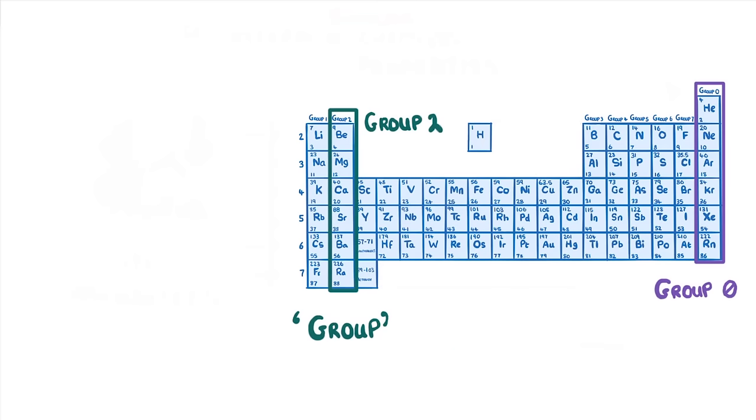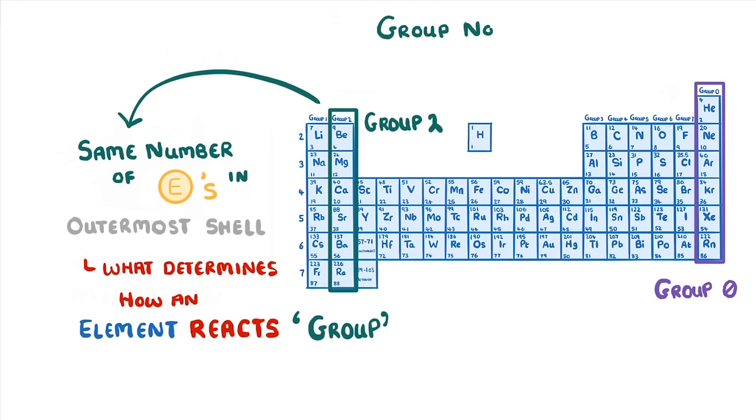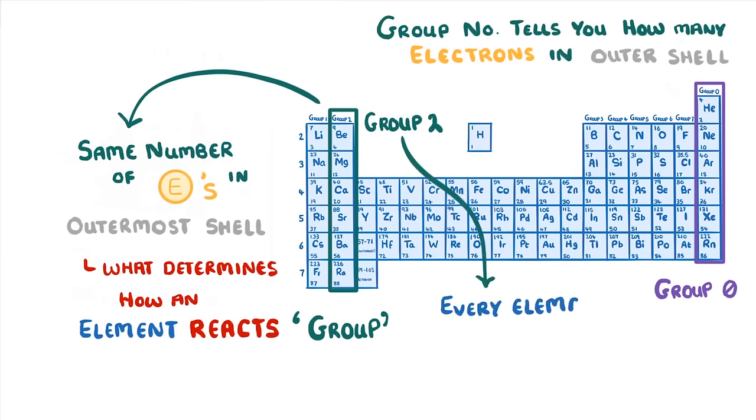The reason that elements in each group have similar chemical properties is that they have the same number of electrons in their outermost shell. And this is largely what determines how an element reacts. In fact, the group number actually tells you exactly how many electrons they have in their outer shell. So, as we're looking at group 2, we know that every element in this group has two electrons in its outermost shell.